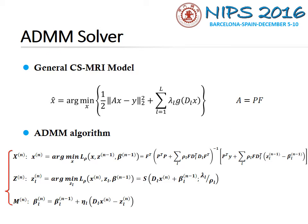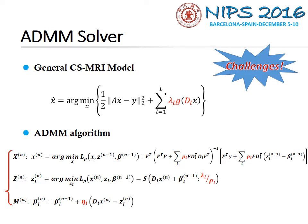The ADMM algorithm is a classical method for this model. It alternatively optimizes X, Z, and Beta by the following iterations. However, it is challenging to choose an optimal transform DL, regularization function G, and other ADMM parameters highlighted in red.